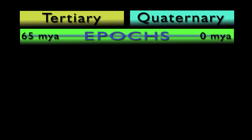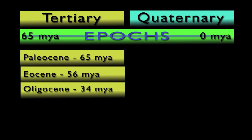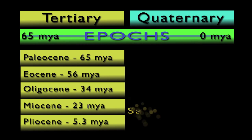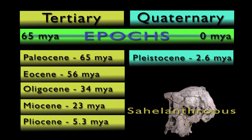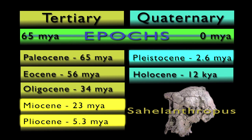The Tertiary and Quaternary periods are divided into smaller time periods called epochs. The Tertiary breaks down into the Paleocene, Eocene, Oligocene, Miocene, and Pliocene epochs. We would find Sahelanthropus in the late Miocene epoch. The Quaternary breaks down into the Pleistocene and Holocene epochs. We will be concentrating on the late Miocene epoch through to the end of the Pleistocene epoch as we continue our quest to understand the family tree of Homo.